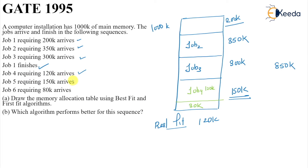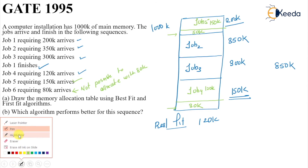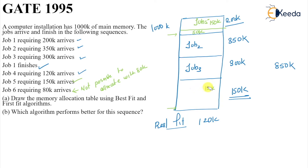Job five arrives with 150k and best fit allocates it in the 150k remaining space at the end. That leaves 20k or 50k remaining. Then job six arrives with 80k, but the only spaces left are 50k and 30k — neither is large enough. So job six cannot be allocated with best fit.